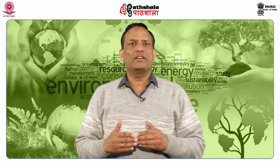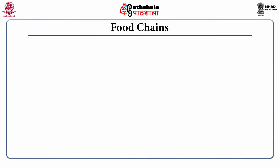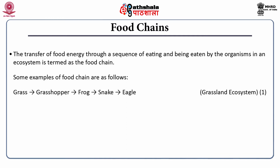What are food chains? The transfer of food energy through a sequence of eating and being eaten by the organisms in an ecosystem is termed as food chains. Some examples of food chains are given here. The first one is a grassland ecosystem, starting with grass, then grasshopper, then frog, then snake and then eagle. The second example is a forest ecosystem, starting with a tree, then fruit eating birds, then bigger birds, eagle, etc.